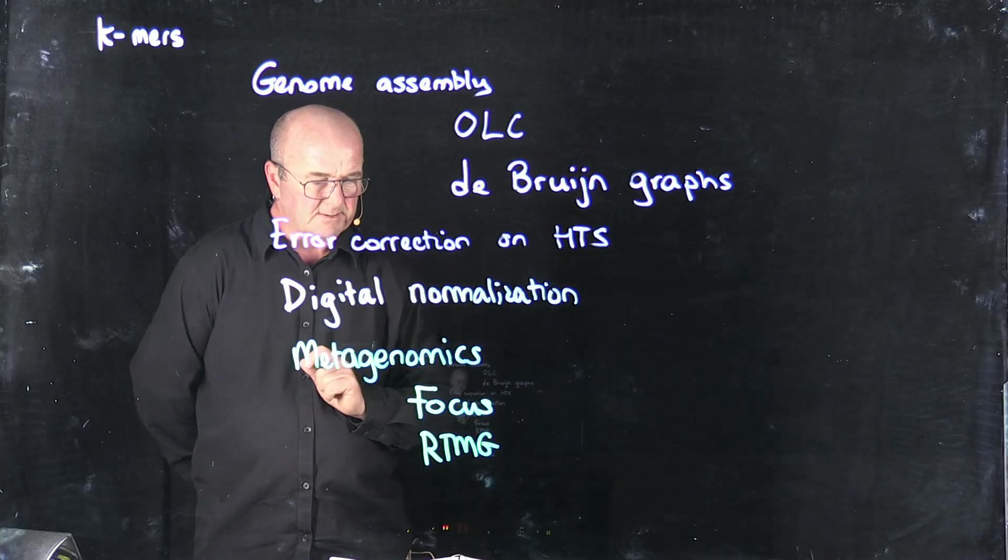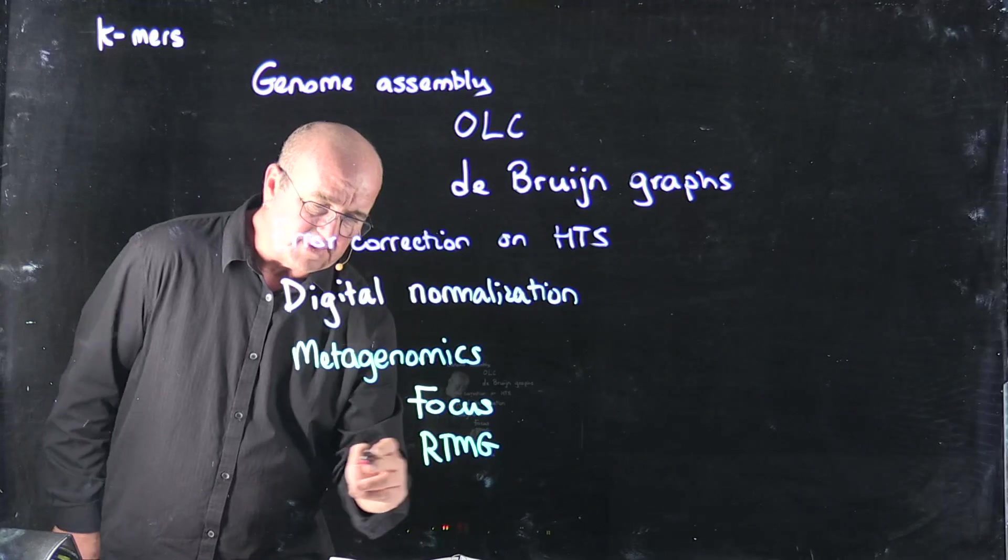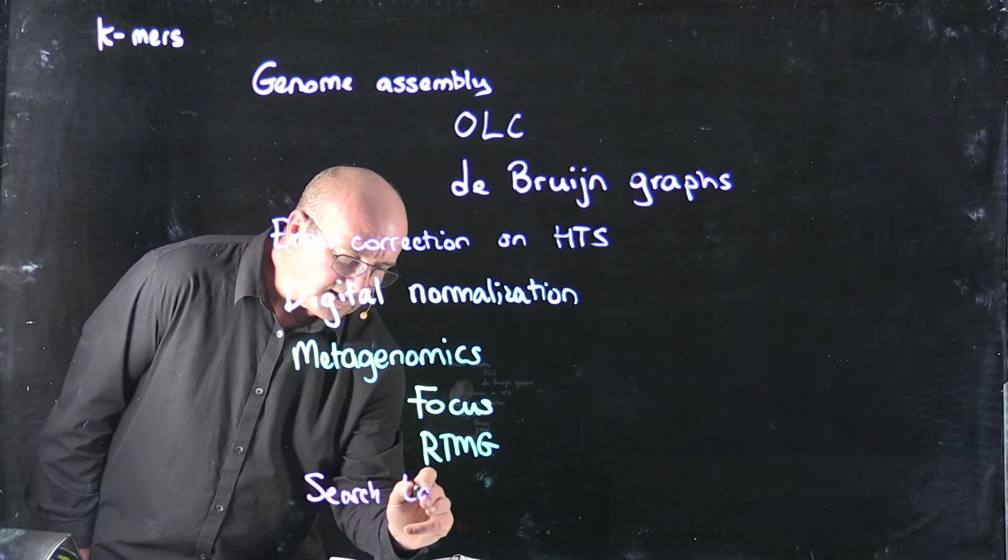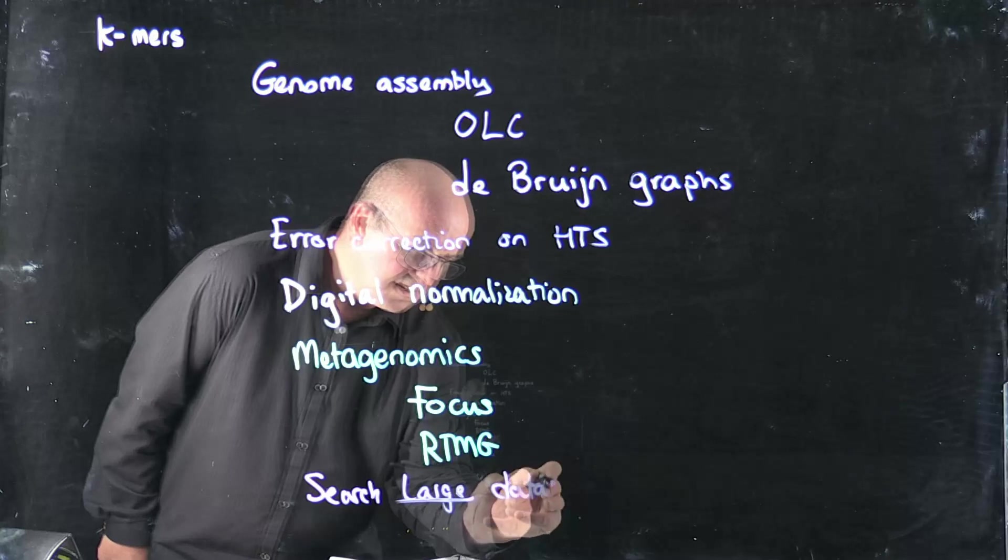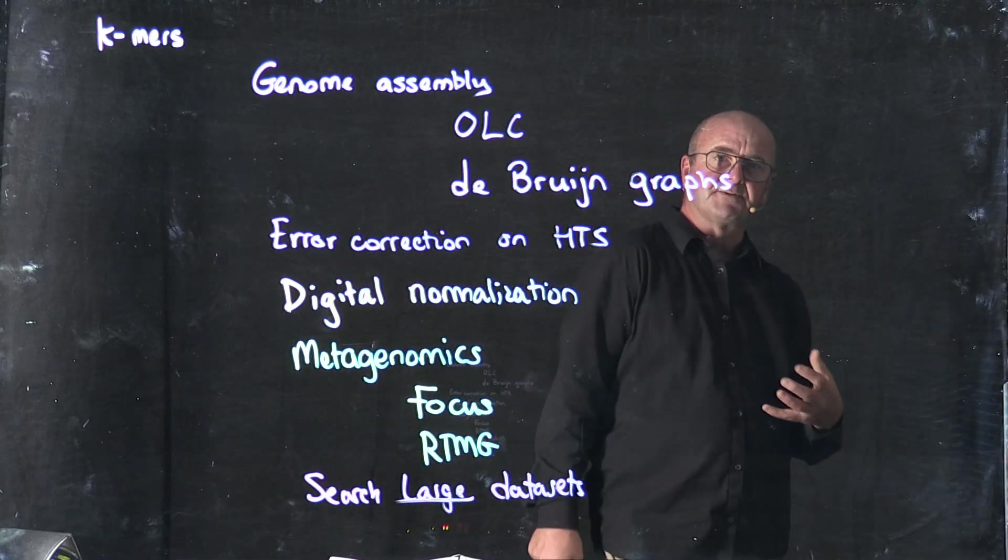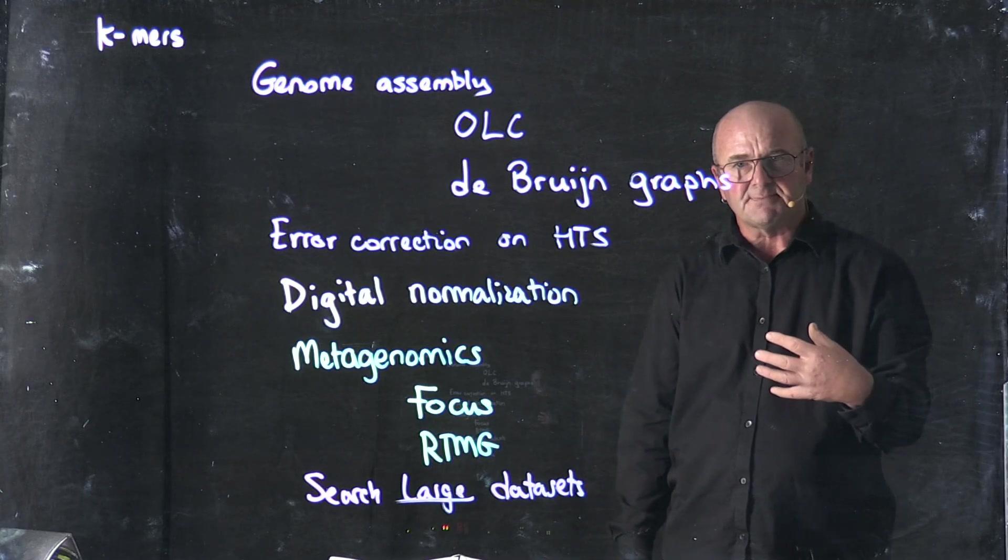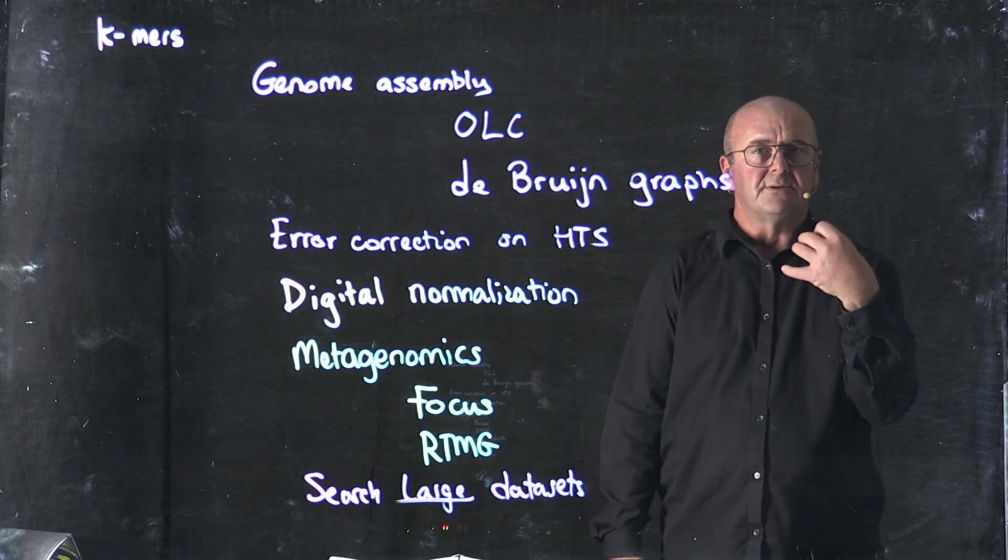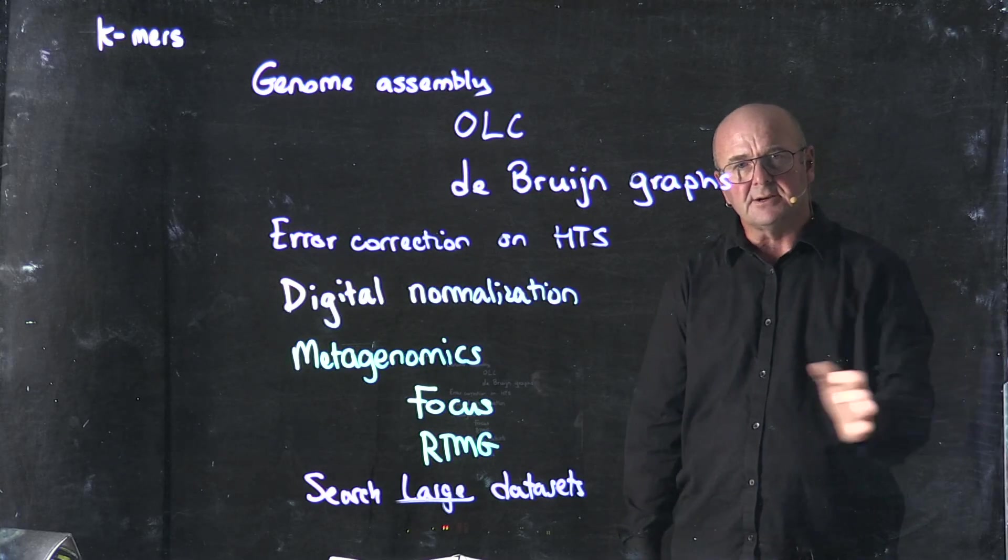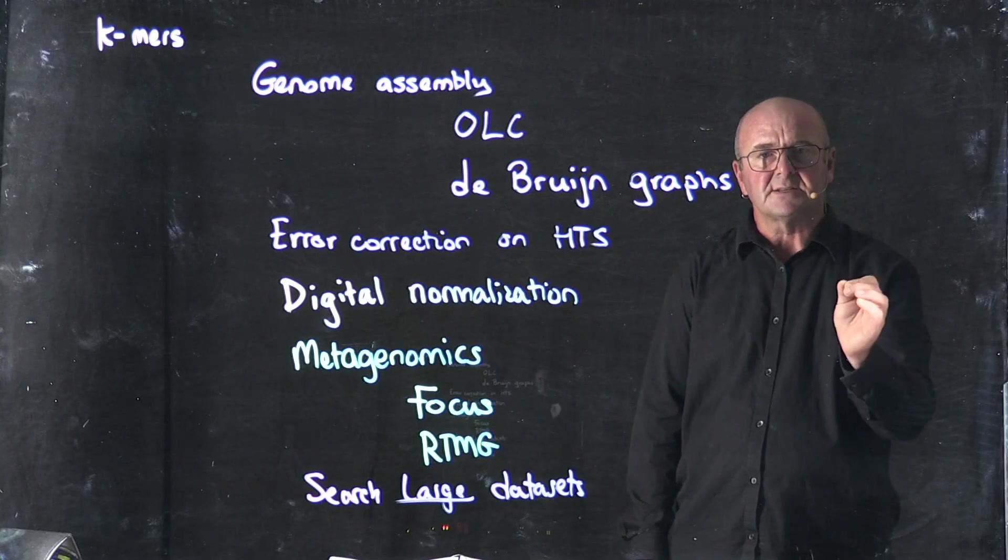And then another goal of counting K-mers that we may want to do is to search through large data sets. So for example, if we wanted to search through all of the sequence read archive, one of the ways that we could do that is we can identify specific K-mers that we're looking for or counts of K-mers in specific samples, and then go and see which ones are present. So there are many reasons why we want to count K-mers.